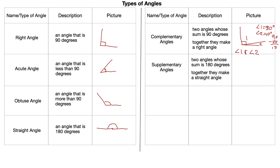Similar to that are supplementary angles — two angles whose sum is 180 degrees; together they make a straight line. If a straight line is cut into two pieces, angle three and angle four are supplementary. If angle four is 80 degrees, then 180 minus 80 tells you angle three must be 100 degrees.